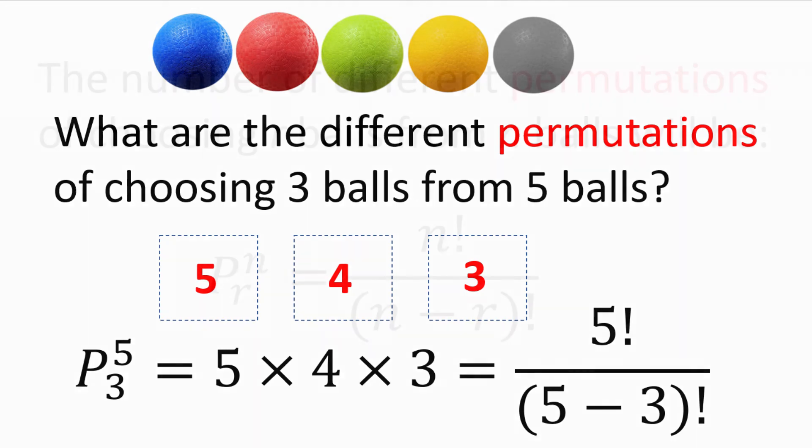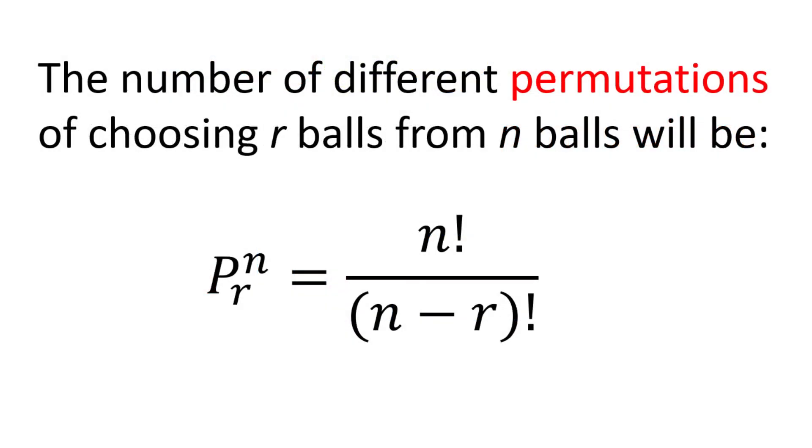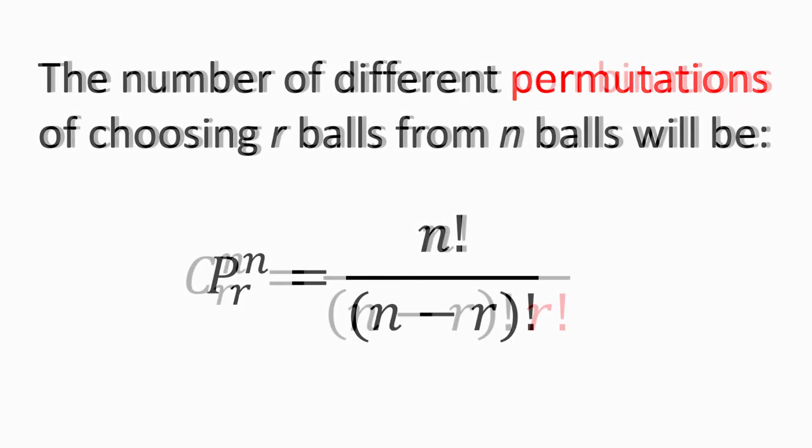With this, you should be able to identify the pattern, and we can write down the general expression for the number of different permutations of choosing r balls from n balls. This is denoted as P superscript n subscript r, which equals n factorial divided by n minus r factorial.